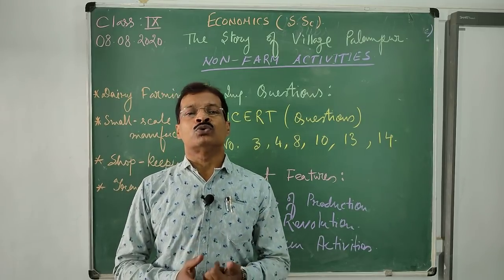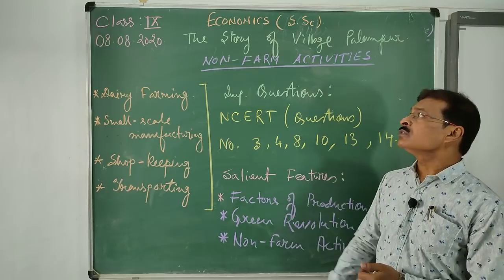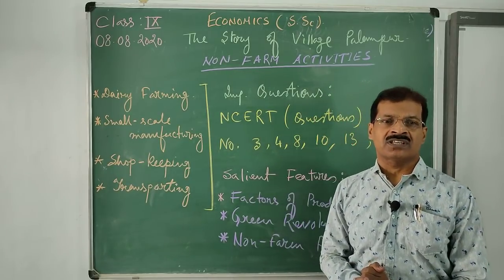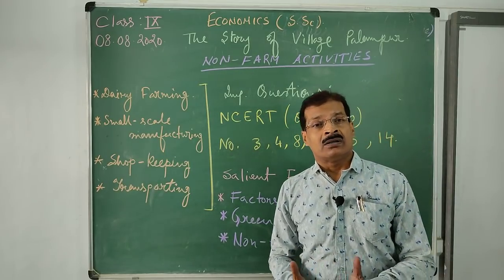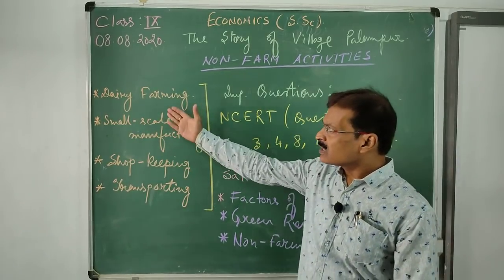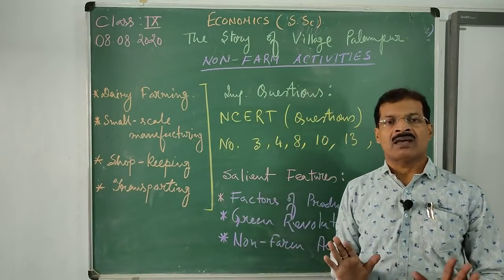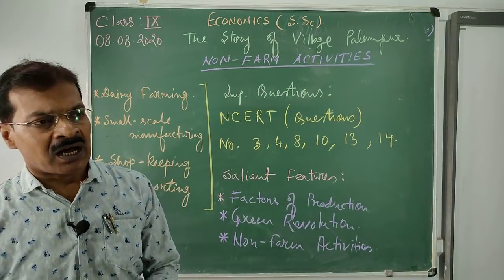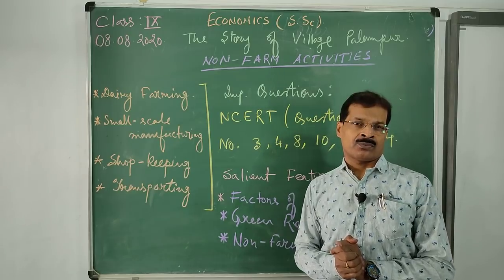Those who are not accustomed to farming and agricultural activities but maintain their own livelihood through other means are engaged in non-farm activities. There are different non-farm activities: dairy farming, small-scale manufacturing, cattle, shopkeeping, transporting, beekeeping, piggery, poultry farming, and many more. In Village Palampur specifically, we see dairy farming, small-scale manufacturing, shopkeeping, and transporting are available.